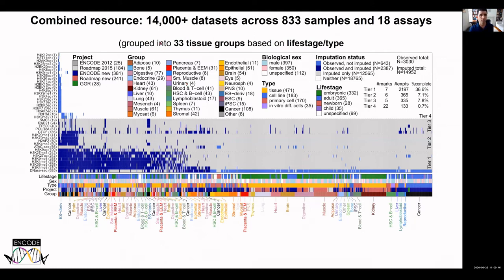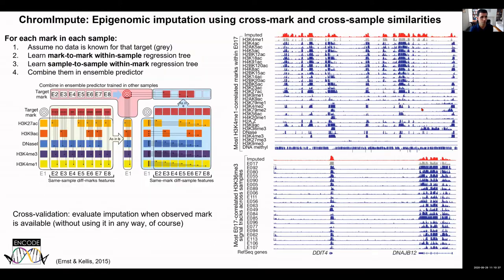The combined resource contains 14,000 epigenomic tracks across 833 samples and 18 different assays, covering 33 different tissue groups across four sample types, five life stages, two sexes, and five projects. Data sets are grouped into tiers based on density of observed coverage — tier one is densely covered from observed data, while tiers two through four have progressively lighter observed coverage. Most data sets are imputed, though some are both imputed and observed, and others are observed only.